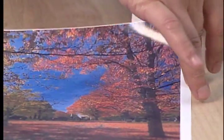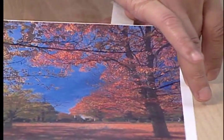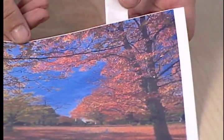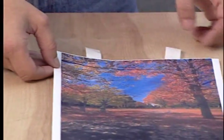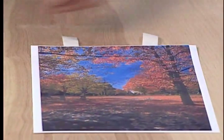Using framers tape, cut off tabs of tape and apply them vertically to the top edge of the artwork about two inches from the corners. Make sure you are using an acid-free mounting tape.